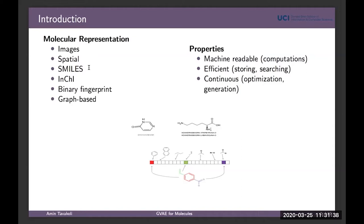Another representation is fingerprints, usually in binary form. Each element of the fingerprint corresponds to the presence of a template or functional group that is important. You can also represent molecules as their graph structure, where each molecule is a simple graph with nodes and edges. Each of these representations has pros and cons.